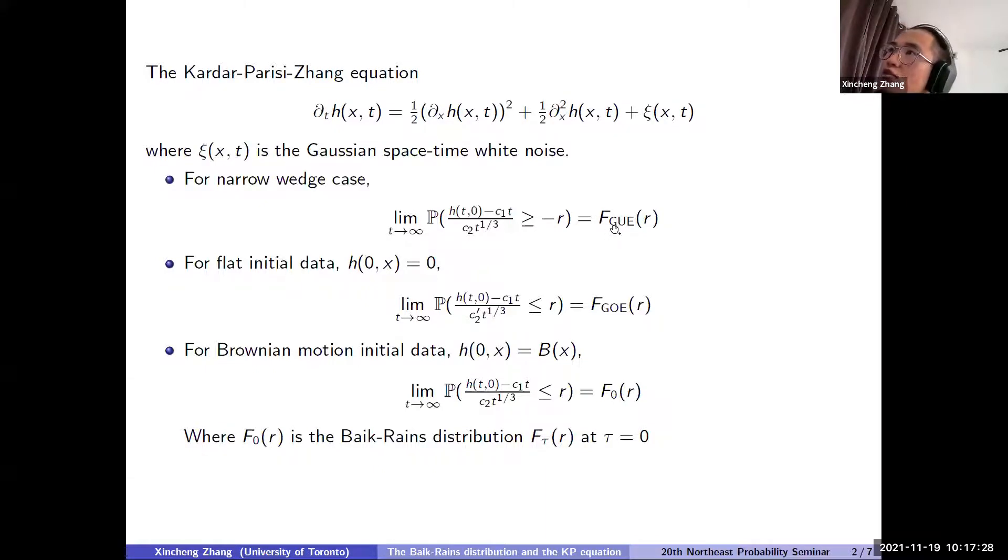So both here, both F-GUE and GUE distributions arise in random matrix theory. So they describe the probability distribution of the largest eigenvalues in GUE and F-GUE random matrix. And then for the Brownian motion initial data, you will see this F₀R distribution. So this F₀R is the Baik-Rains distribution F_τR evaluated at τ equal to zero. So here, we will give the definition of Baik-Rains distribution later. So these are three possible initial data. Of course, there are some more. So given these three distributions, it's interesting to know whether there exists some general rules which govern the distribution function.